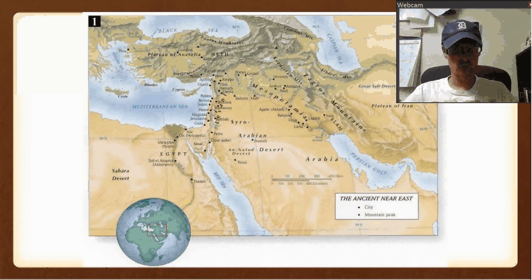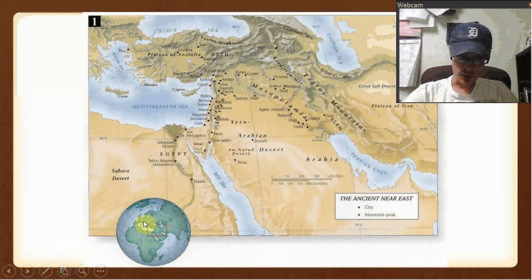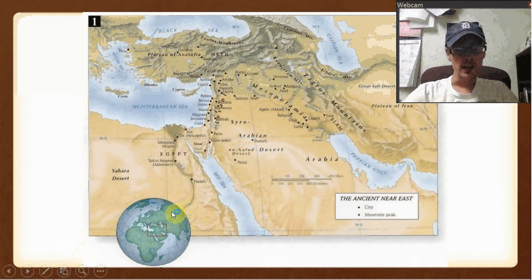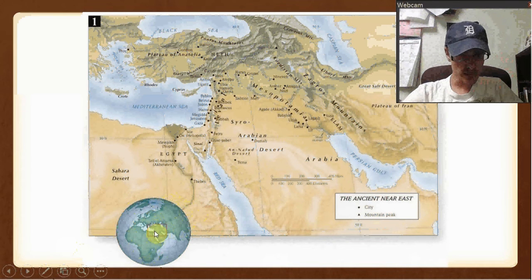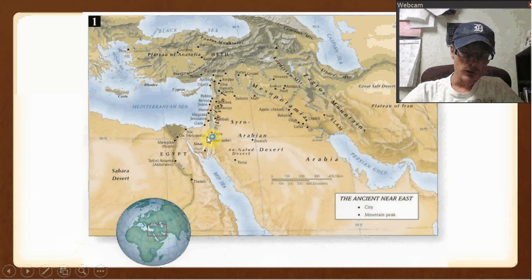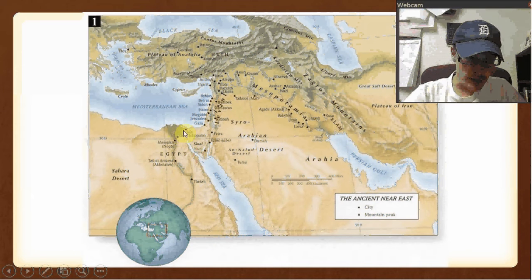This is where in the world the events of the Bible happened. If you look on this big map, you can see Africa here, Europe over here, India and Asia over here, and Russia over there. Right here is Israel. This is it blown up — modern-day Turkey, Iran and Iraq on this side, Saudi Arabia down there, and here's Egypt.